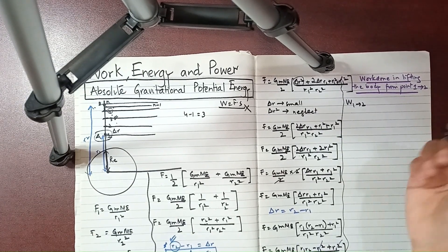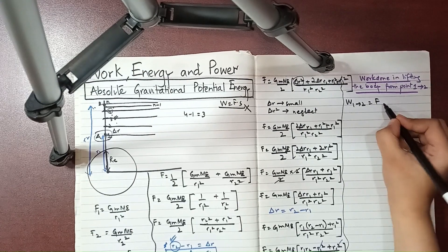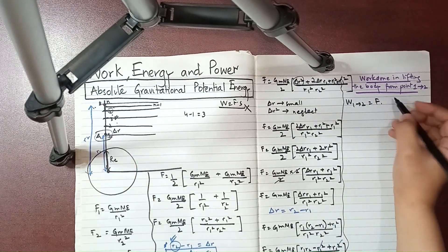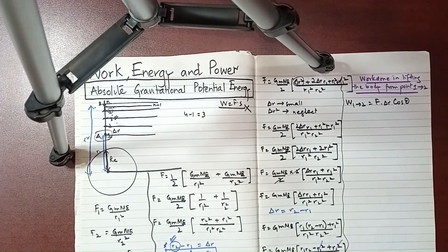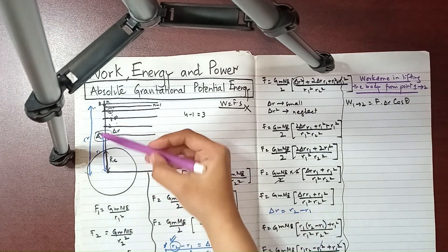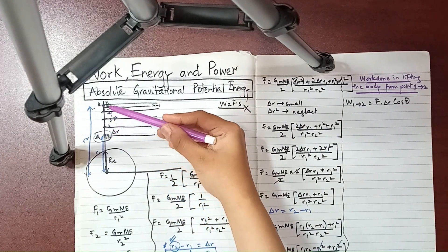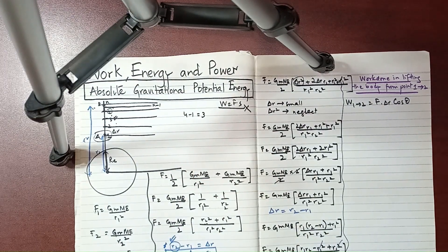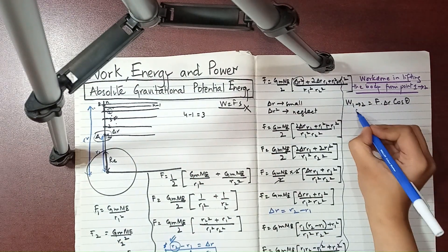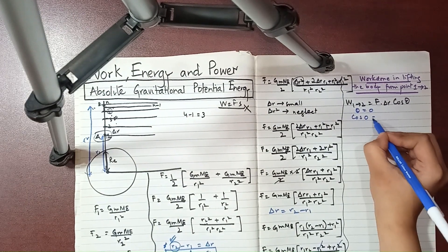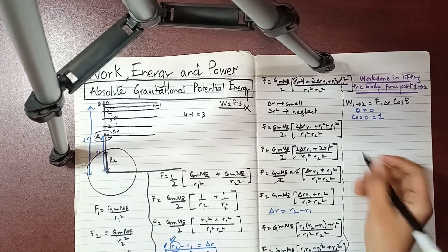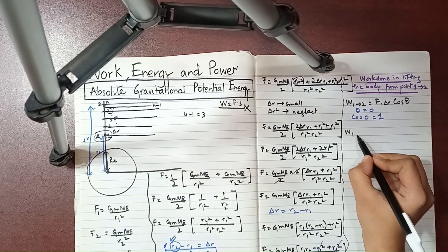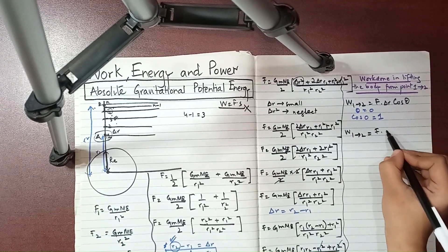We are looking at work done from point 1 to 2, and that is equal to force into delta r into cos theta. Now look at this — the direction we put in, the displacement is also covered in this direction, so the angle would be zero, and cos zero is one. These are the things you need to remember. Moving on, work from 1 to 2 equals force into delta r.